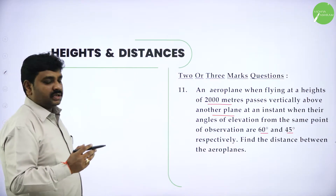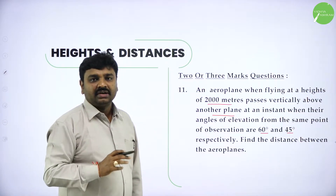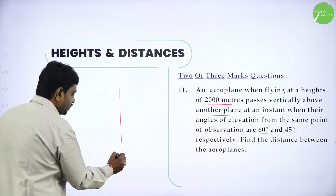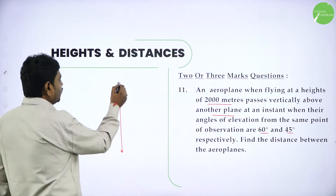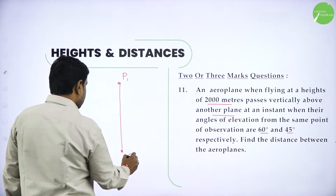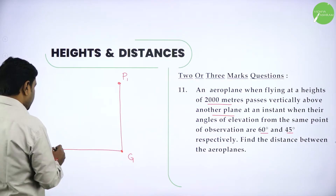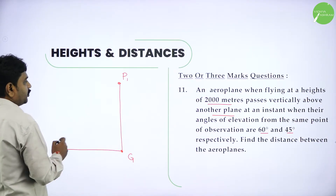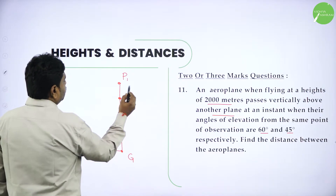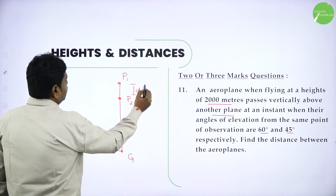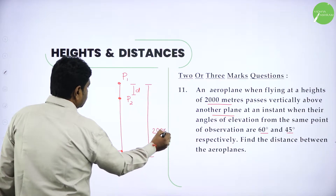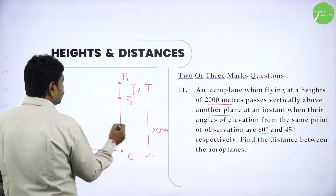Representing this in the form of a triangle is important. A plane is flying at a height of 2000 meters from ground level — this is plane P1 at ground level. When it passes over another plane P2, let us assume the distance between them is D, so the height of P2 from the ground is 2000 minus D, and P1 is at 2000 meters total.